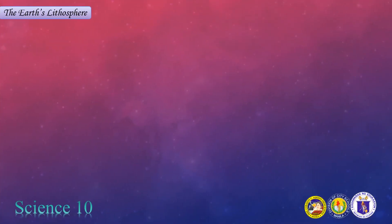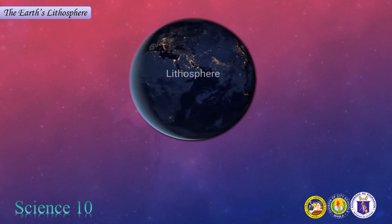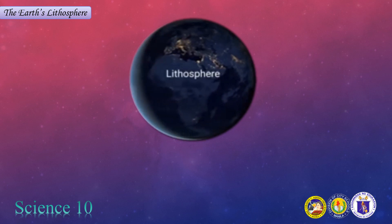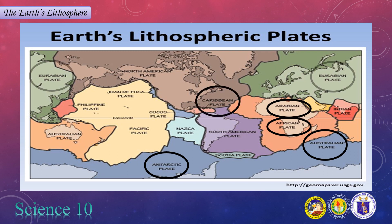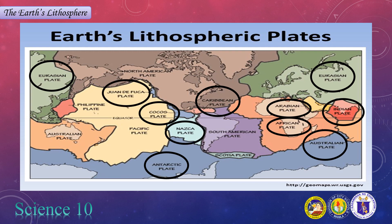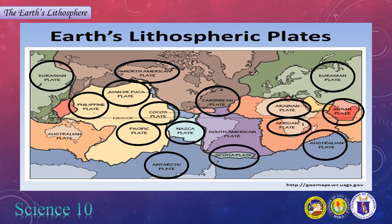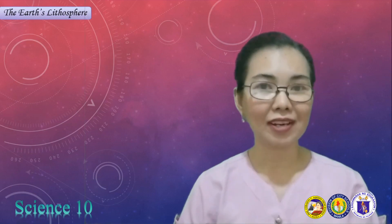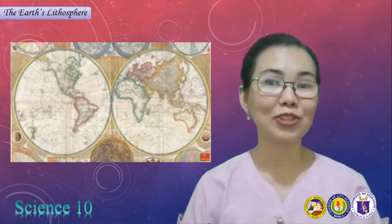Let us focus on the lithosphere. Lithosphere came from the Greek words lithos, which means rocky, and sphera, which means sphere. So, simply, we can describe lithosphere as a rocky sphere. It is the rigid, outermost shell of a terrestrial-type planet or natural satellite defined by its rigid mechanical properties. On Earth, it is the coexistence of the crust and the upper part of the mantle that behaves elastically on timescales of thousands of years or greater.